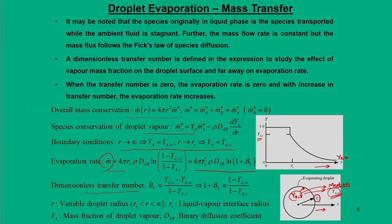The transfer number B_Y is defined as (YAs − YA∞) / (1 − YAs), the ratio of concentration difference at the surface and far stream. Its main significance is that it is defined with respect to mass transfer or mass fraction of the droplet vapor. When the transfer number is zero, the evaporation rate is zero; with increasing transfer number the evaporation rate increases.